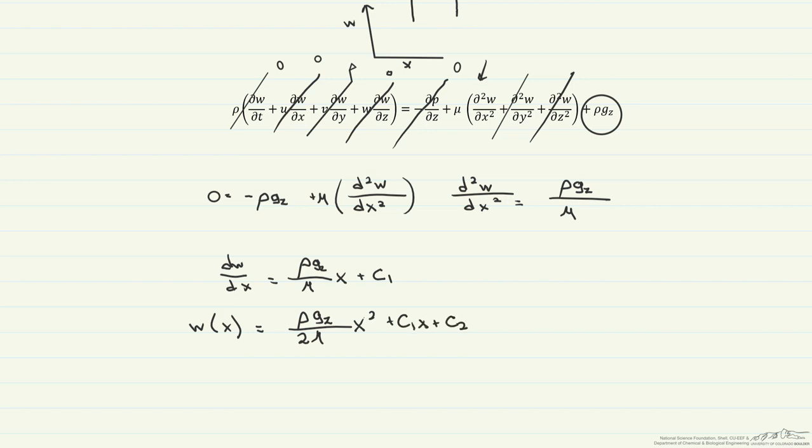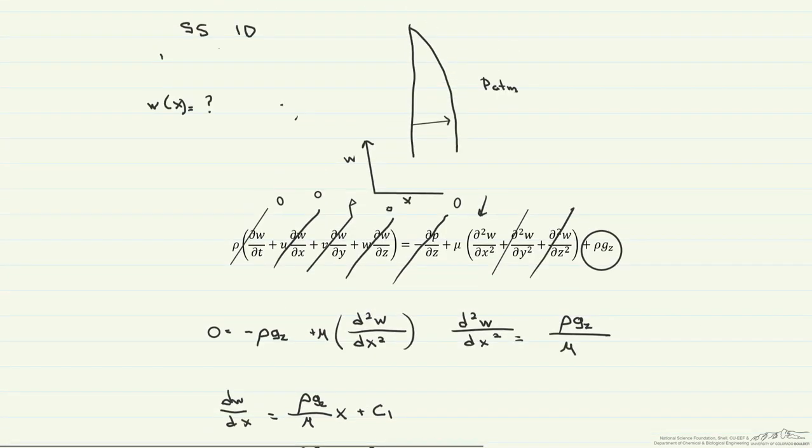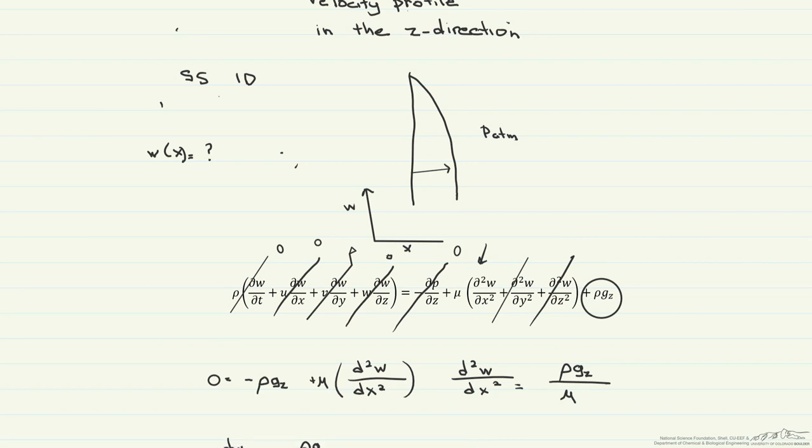So since we have two constants, we're going to need two boundary conditions to solve for the velocity profile. So let's look at these two boundary conditions, and we'll go back to here. So we're going to call this, right here, x equals zero. And right here, we're going to call this x equals some L.